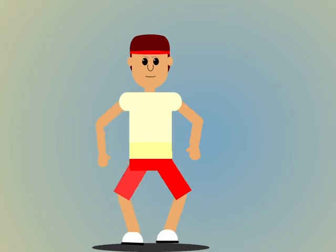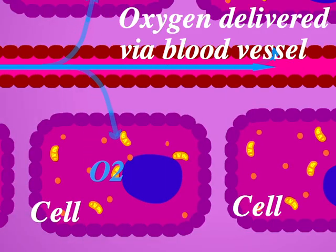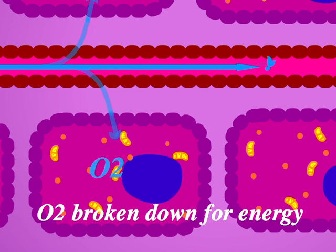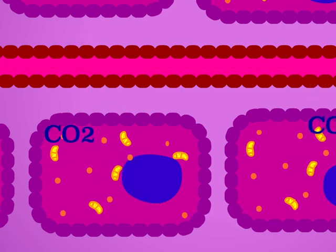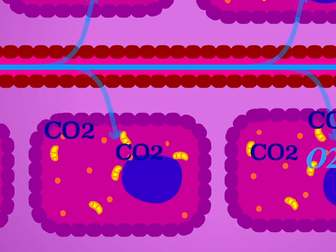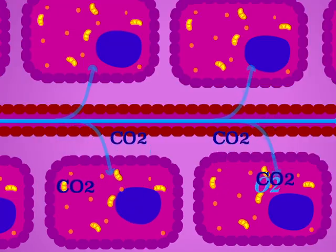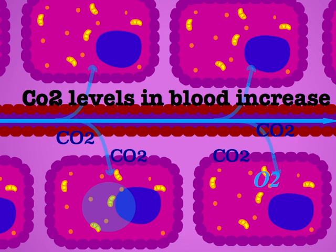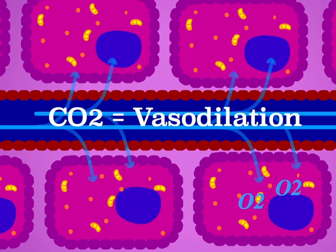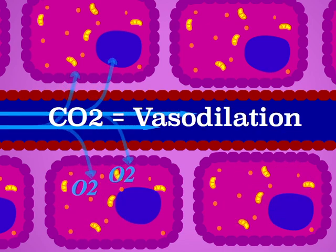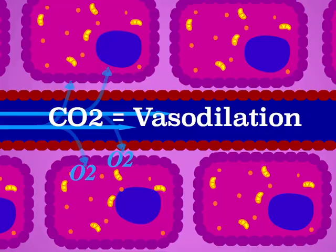Tim is busy exercising to help us demonstrate an important point. As he makes his body work harder, his cells have to break down more oxygen for energy. The harder Tim works, the quicker his cells will work through the available oxygen. Breaking down all of this O2 into energy will produce ever greater quantities of carbon dioxide, which will be drawn out of the cells and into the blood vessels. The blood vessels interpret this rise in CO2 as a sign that the cells are working harder and dilate in response, bringing greater quantities of oxygen and nutrients to the tissue to meet the increased demands. CO2 is therefore a potent vasodilator.